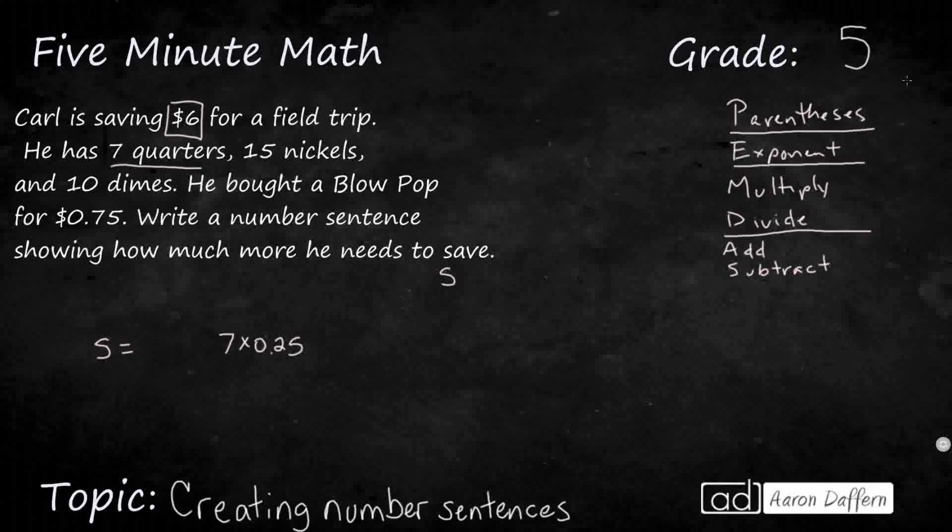We can do the same thing with 15 nickels. 15 times 5 cents. And then we can do the same thing with the dimes. 10 times 0.1. We could probably go ahead and put that 0.10, but we really don't need it. We could have left it at 0.1. Now, all that together, how much money does Carl have in coins? What could we do there?